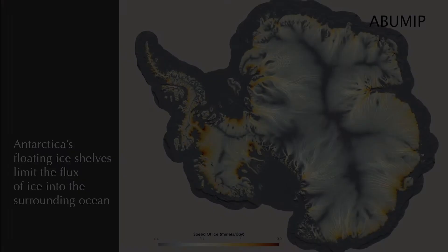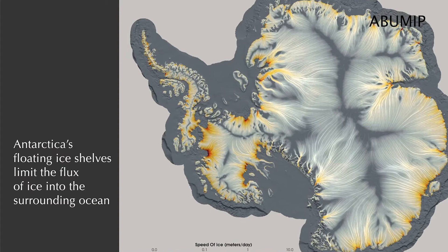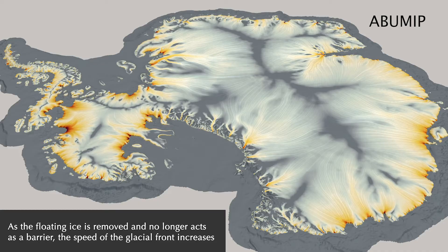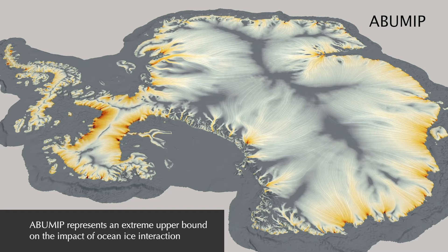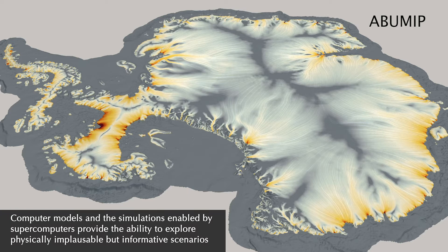Ice shelf thinning reduces the ice shelf's ability to restrain the flow of ice farther upstream, increasing the ice sheet's inland rates of flow. Visualizations of 200 simulated years from the climatologically unrealistic ABUMIP simulation show this. Notice, as the floating ice is removed and no longer acts as a barrier or buttress to the upstream ice, the speed of the glacial front dramatically increases, representing an increase in the flux of ice from the ice sheet into the ocean. ABUMIP represents an extreme upper bound on the impact of ocean-ice interactions on Antarctic evolution. A unique aspect of computer models and the simulations enabled by supercomputers is the ability to explore physically implausible but informative end-member scenarios like this.